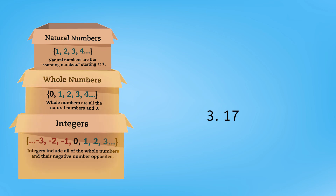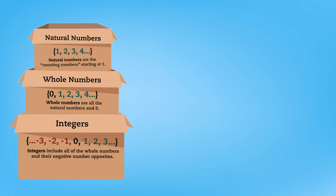Great work. Let's finish with 17. Where would 17 go? 17 is an integer. And 17 is also a whole number. And 17 is also a natural number. So we'll put it in the natural number box, which tells us that it actually fits into all three categories.